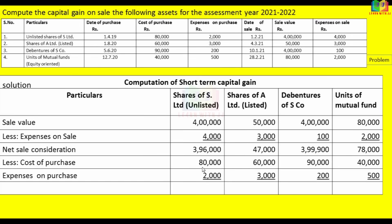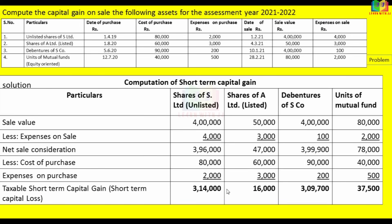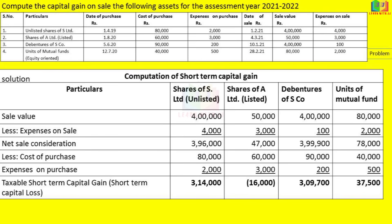The cost of purchase plus expenses on purchase is deducted from the net sale consideration. The chargeable short-term capital gain for unlisted shares: 3,96,000 minus 82,000 gives a gain. For listed shares: 47,000 net sale consideration results in a short-term capital loss. We also have short-term capital loss for some other assets.